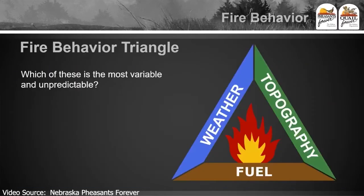Here's our fire behavior triangle. The most variable and unpredictable of all three elements is obviously going to be weather. Weather is always constantly changing, which means our fire behavior on the fire line is going to be constantly changing.